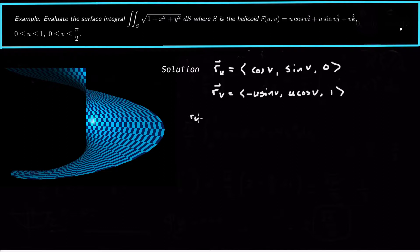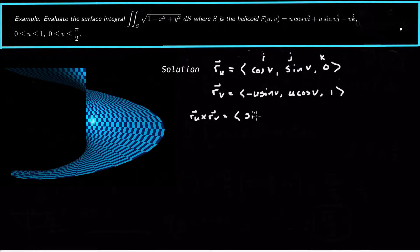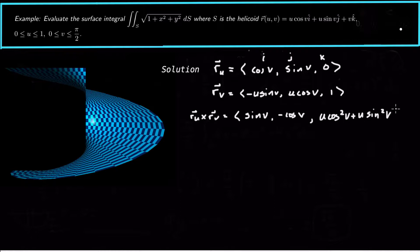Now r_u × r_v is the cross product of these vectors — i, j, k components. Covering up the i hat gives sin v; covering up the j gives −cos v; covering up the k gives u·cos²v + u·sin²v, which reduces to u. So the cross product is the vector (sin v, −cos v, u).